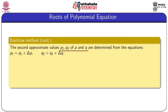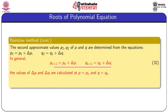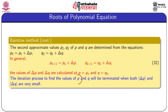The second approximate values are p_2 = p_1 + δp, q_2 = q_1 + δq, where δp and δq are evaluated at p_1 and q_1. In general, p_(k+1) = p_k + δp and q_(k+1) = q_k + δq, with δp and δq calculated at the previous iterate (p_k, q_k). The iteration terminates when both |δp| and |δq| are very small, meaning the corrections are essentially 0.